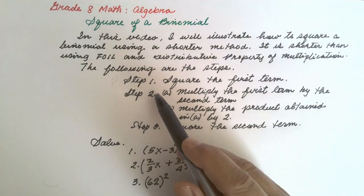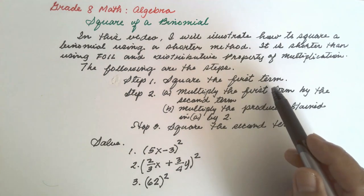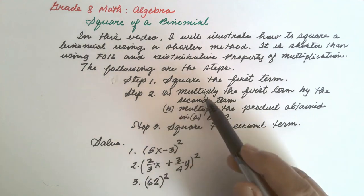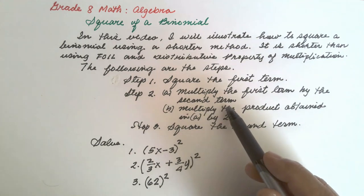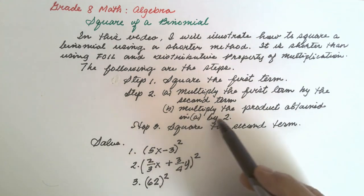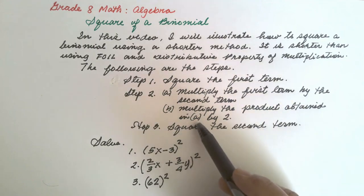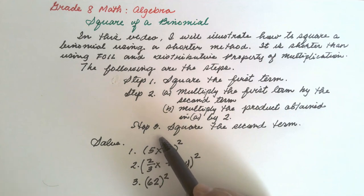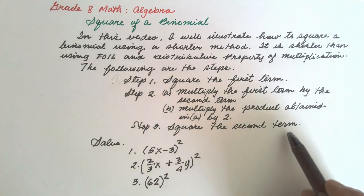Step number one: square the first term. Step number two, letter A: multiply the first term by the second term. Letter B: multiply the product obtained in A by 2. Step number three: square the second term.